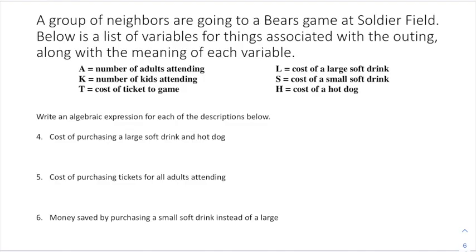Now they want us to write expressions from context. For the cost of purchasing a large soft drink and a hot dog: a large soft drink is L and a hot dog is H, so one large soft drink plus one hot dog gives us L plus H.